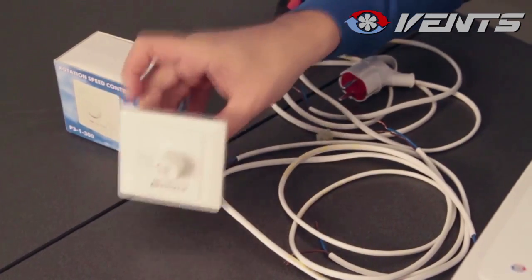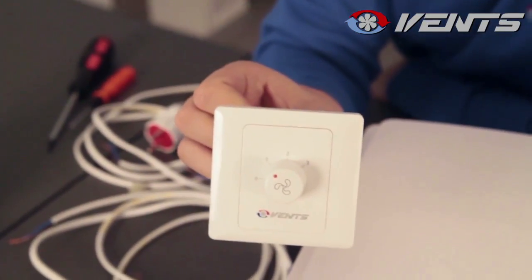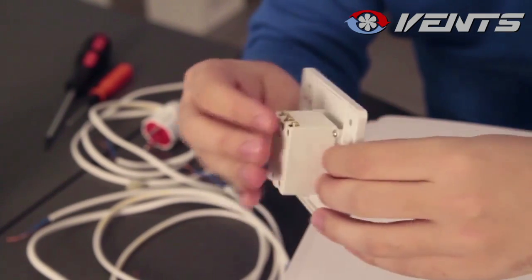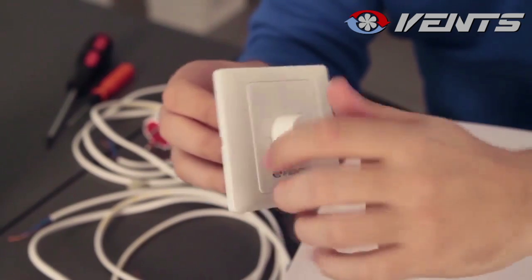Hello, this is a 3-speed switch, model P31300. It has 4 positions: off, the first, the second, and the third speed.